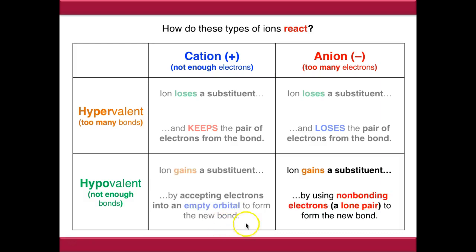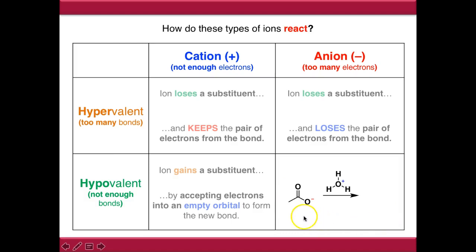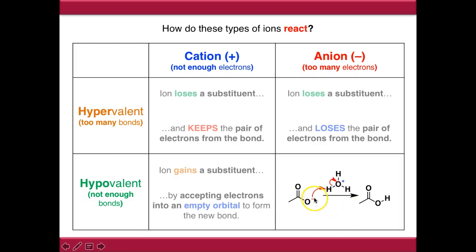In the case of hypovalent anions, we need to use the non-bonding electrons that we now have to form the new bond, and this is most often going to be things like alkoxides or carboxylate salts. We take a carboxylate salt, treat it with hydronium, push the electrons from this non-bonding lone pair to pick up a substituent, and we've got back to a neutral species.